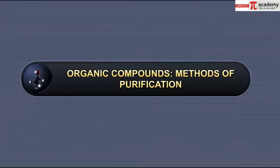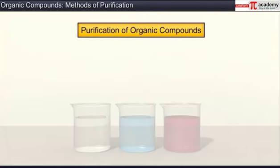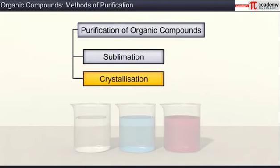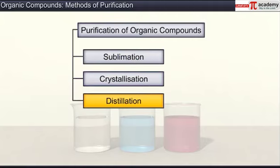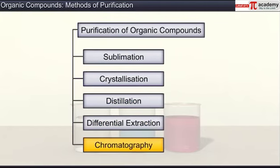In this module you will learn about the methods of purification of organic compounds. Based on the nature of organic compounds and the impurities present in them, organic compounds can be purified using five different methods: sublimation, crystallization, distillation, differential extraction, and chromatography. In this module we will look at the first three methods.